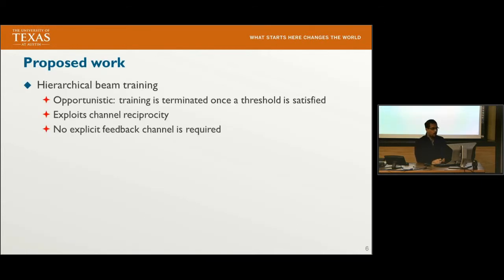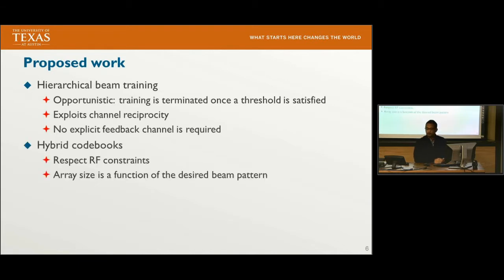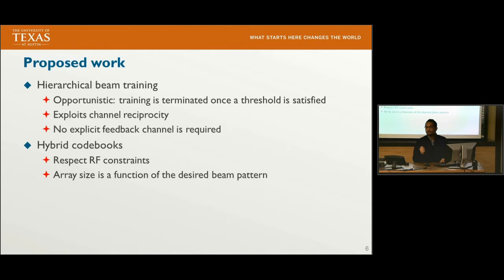In this work, we propose hierarchical beam training, but the proposed technique is opportunistic in the sense that training is terminated once the quality of service threshold is satisfied. The proposed technique also exploits channel reciprocity, and hence no explicit feedback channel is required. We explore hybrid codebooks that respect RF constraints — constant modulus and quantized phase shifts — and the array size is set as a function of the desired beam pattern.